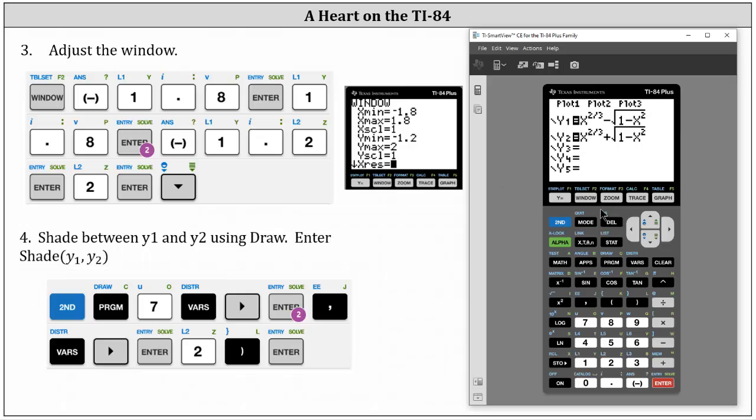The next step is to adjust the window. We press window and enter the values shown here. X min, negative 1.8, enter. X max, 1.8, enter. Leave the x scale at one, enter.